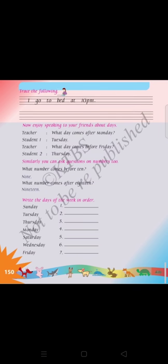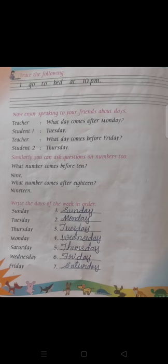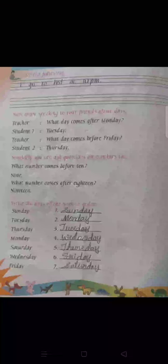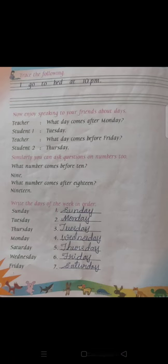Write the days of a week in order. They give the first row of days. You have to copy and write in the dashes. I already completed: S-U-N-D-A-Y Sunday, M-O-N-D-A-Y Monday, T-U-E-S-D-A-Y Tuesday, W-E-D-N-E-S-D-A-Y Wednesday, T-H-U-R-S-D-A-Y Thursday, F-R-I-D-A-Y Friday, S-A-T-U-R-D-A-Y Saturday.